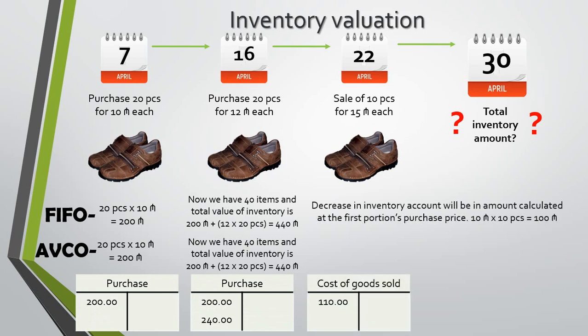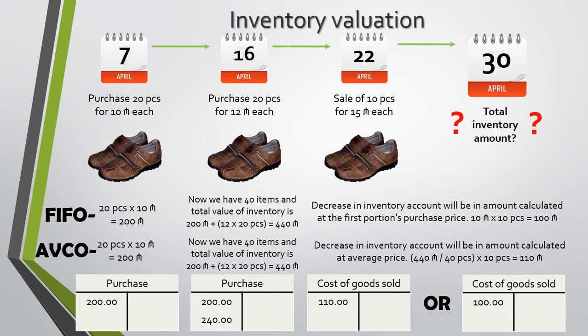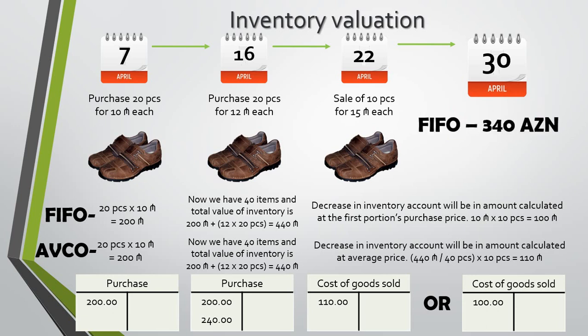Purchase transactions will be the same with both methods, but we can't say the same thing about the sale. By using the first-in, first-out method, the decrease in the inventory account will be calculated at the first portion's purchase price. By using the weighted average costing method, the decrease will be calculated at the average price. This means that by using the first method, our inventory amount at the reporting date will be 340 ASE; by using the second method, 330 ASE.